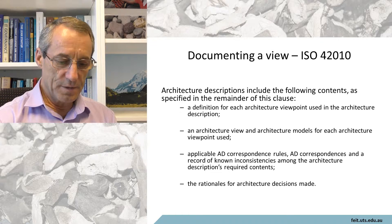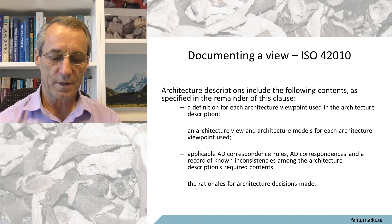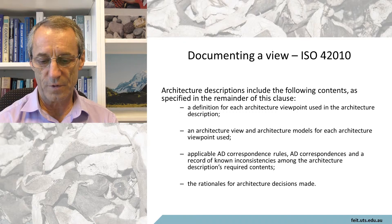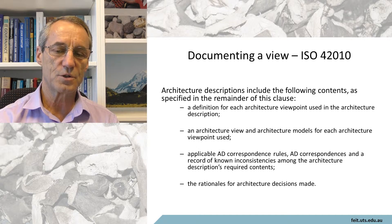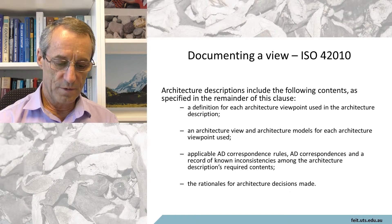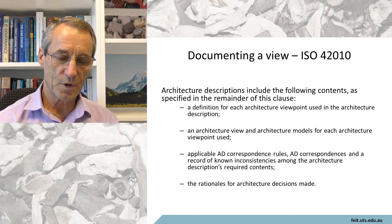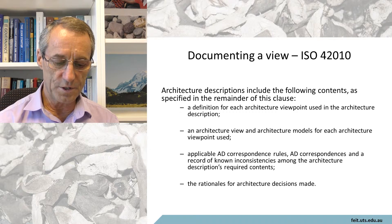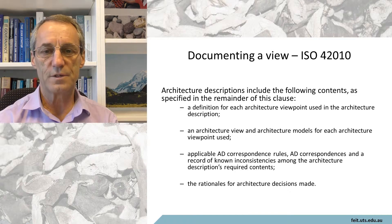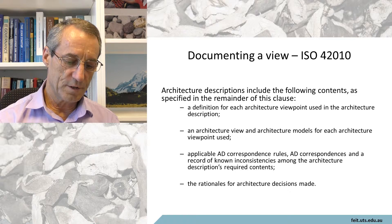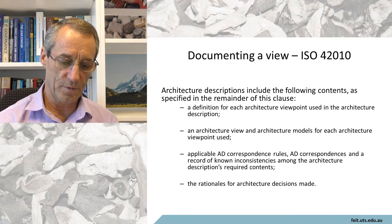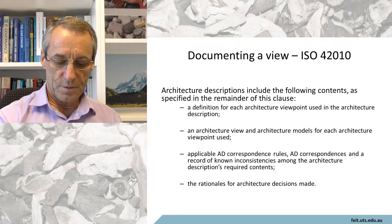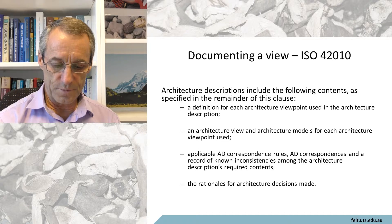ISO 42010 gives advice on documenting an architecture view. Architecture descriptions include the following required contents: a definition for each architecture viewpoint used, an architecture view and architecture models for each architecture viewpoint used — so at least one view and one model — applicable architecture description correspondence rules and correspondences, and a record of known inconsistencies among the architecture descriptions.